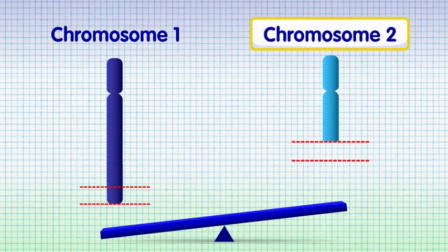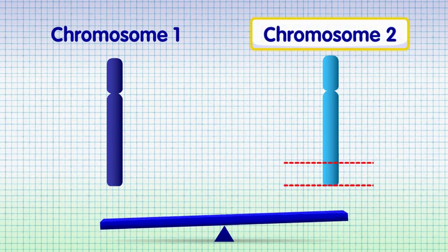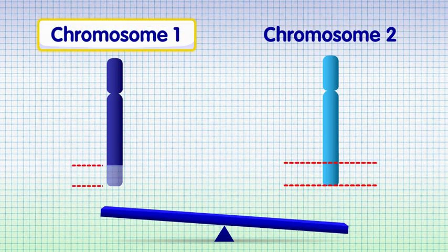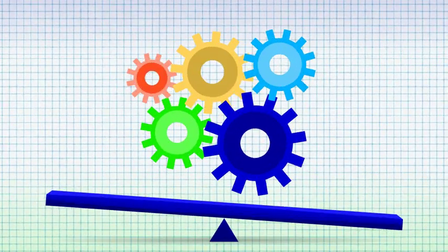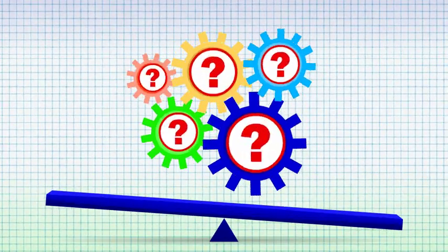The opposite could also occur, resulting in too much of chromosome 2 and missing a segment from chromosome 1. In some translocations, other unbalanced possibilities can also occur.